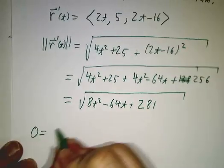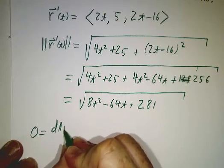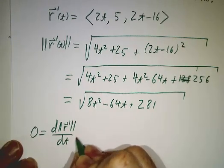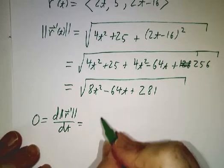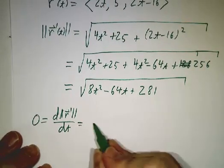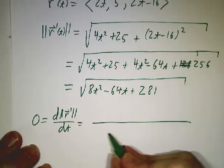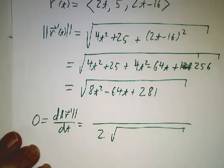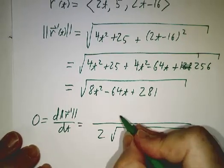So 0 is the derivative of the speed with respect to time. And that's, by the chain rule, 1 over twice that square root times the derivative of what's inside.